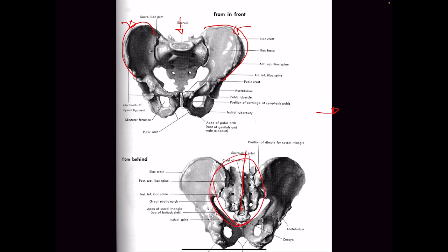Why does the sacrum look the way it does? What connects to it? The spine. What muscle connects to those bones? The big one — we call it the cape. The lats. And those lats — if they release, you will probably die. So they have a big gnarly section.